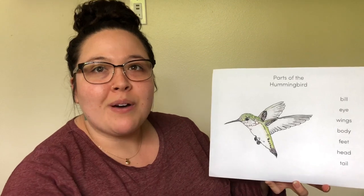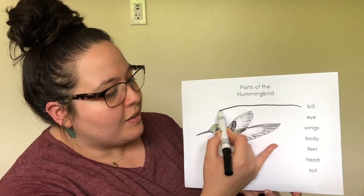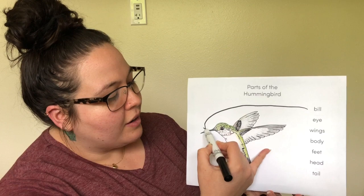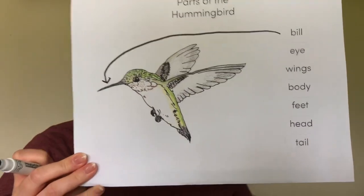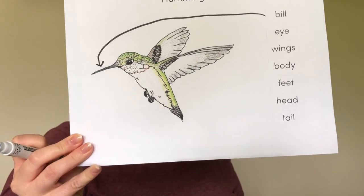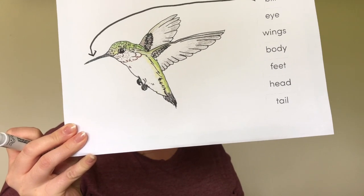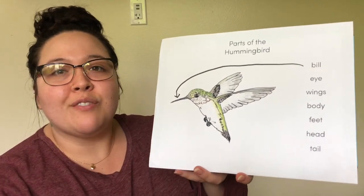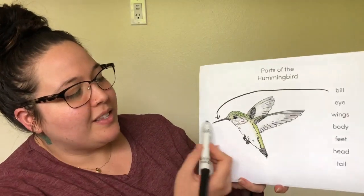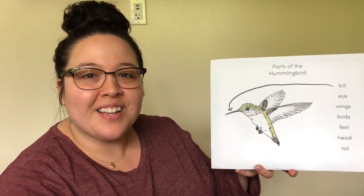The first part we're going to talk about is the bill — the part that sticks out. The bill is needle-thin, as thin as a needle, so that the hummingbird can go deep down into a flower to get nectar. That's the part that helps the hummingbird get to the nectar inside the flower.